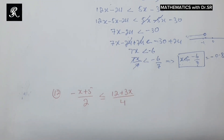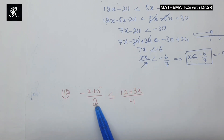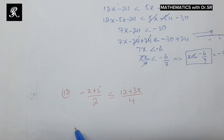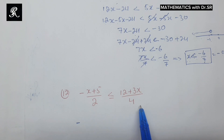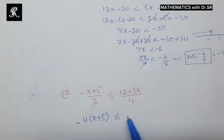Now we consider question number 12. Again we have fractional terms in the inequality and we need to get rid of them. We will multiply throughout the inequality by the least common denominator. Since there is no x variable in the denominators that could cause a problem, we will use cross multiplication. Multiplying gives us 4(x plus 5) less than or equal to 2(12 plus 3x).